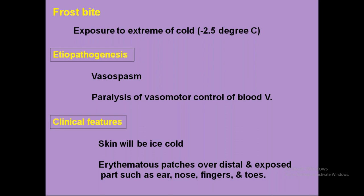In frostbite, there is vasomotor loss of control of blood vessels. Because of prolonged extreme cold of minus 2.5 degrees centigrade — in icy areas — if the person exposes bare feet or bare hands, there is extreme vasospasm, as the body tries to conserve heat. If exposure is prolonged, the normal body heat conservation mechanism becomes deranged, leading to paralysis of vasomotor control. Clinically, the skin will be ice cold.